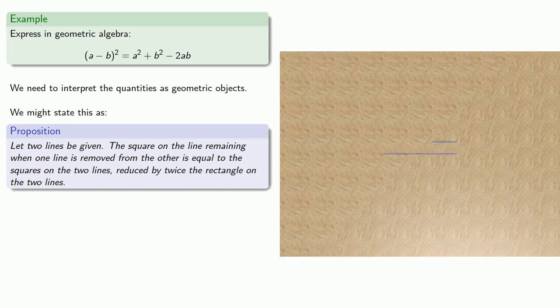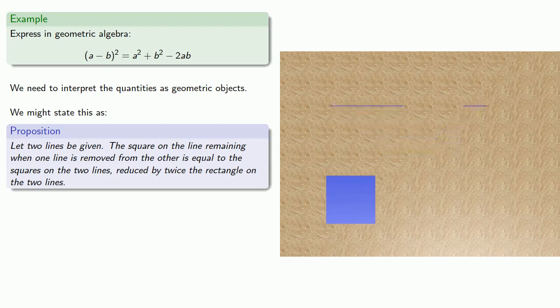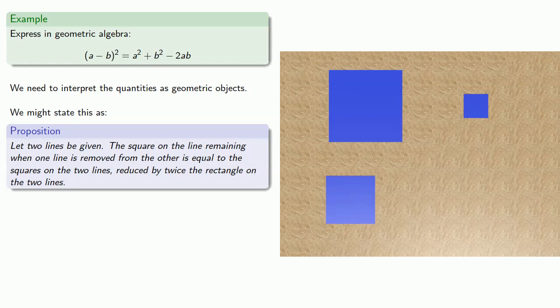If we try to draw that picture, we have a line. We have another line. But we want to remove one line from the other. So here's our line remaining. And we want to take a look at the square on the line remaining. It's supposed to be equal to the squares on the two lines. And now for the complicated part, we're going to reduce these two squares by twice the rectangle on the two lines. So we need to remove these two rectangles. And while it's possible to see how that can be done, maybe there's a better way.